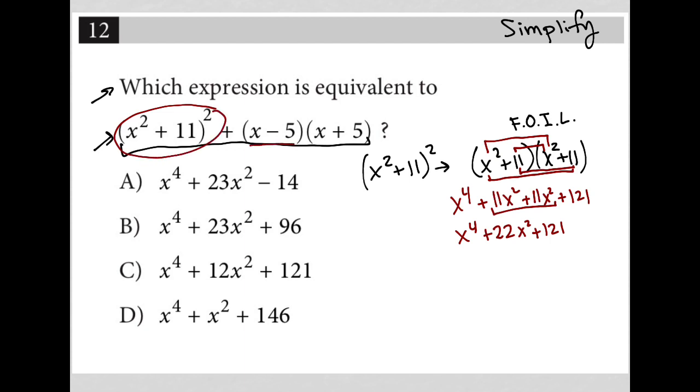Now I have to deal with this x minus 5 times x plus 5. So let's do FOIL for that as well. First times first is x times x, which is x squared. Outer times outer is x times 5, which is positive 5x. Inner is negative 5 times x, so I get a minus 5x. And then last is negative 5 times 5, so I get a negative 25.